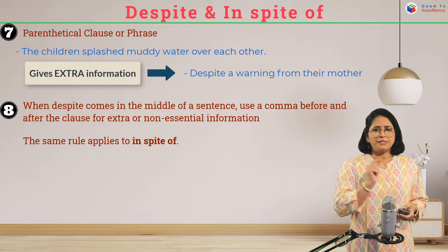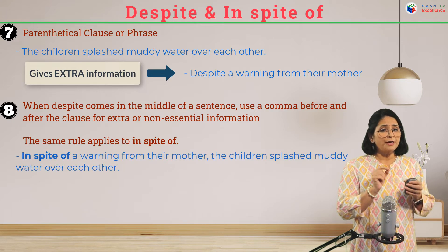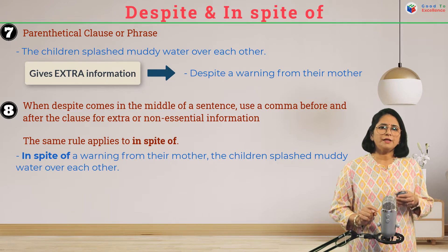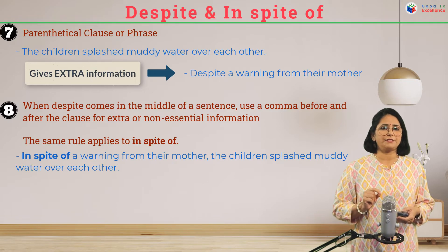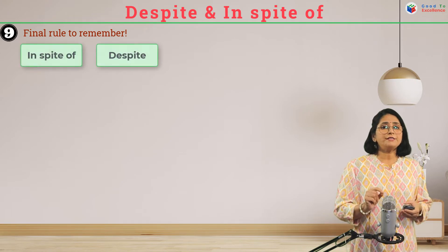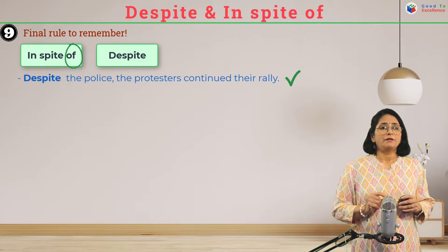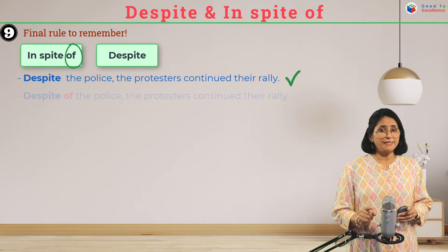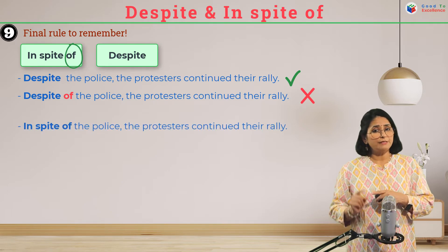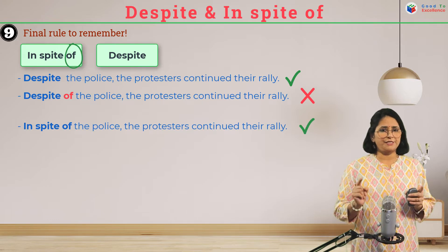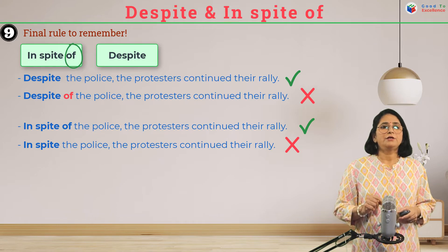The same comma rule applies to 'in spite of.' For example: 'In spite of a warning from their mother, [comma] the children splashed muddy water over each other.' Please remember: 'in spite of' is always followed by 'of.' 'Despite the police' is correct, but 'despite of the police' is incorrect. Similarly, 'in spite of the police' is correct, but 'in spite the police' — without 'of' — is incorrect.